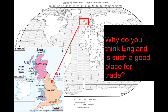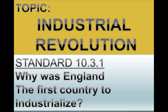Anything that I have to say on this lecture, please jot down on your notes. The lines to the right of each slide — please use those to make side notes on anything I mention that isn't necessarily on the slide. For the next two slides, you're going to answer two questions. The first question asks: why do you think England is such a good place for trade? Take a look at the map. I'm going to pause the video and let you take a few minutes to answer. Then moving on to the next slide: why was England the first country to industrialize? I'll pause again so you can answer that question.